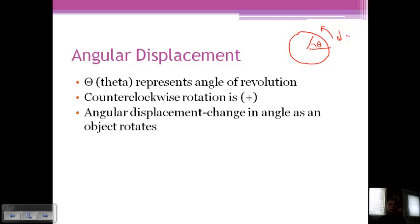So angular displacement is the change in the angle as an object rotates. So like we talked about, if we start here first and we're rotating in the negative direction, okay, if we stopped here, then this would be our angular displacement, or theta.